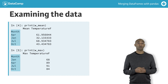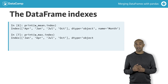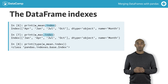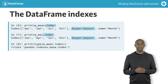The data frame indexes are accessed directly with the dot index attribute. Both W_mean and W_max have indexes of type object because the index labels are strings. The type function shows us the data type of the indexes.